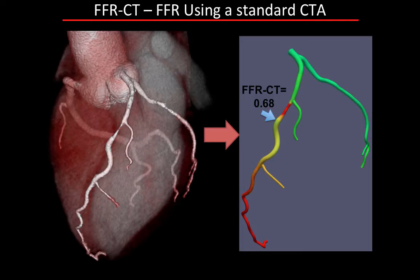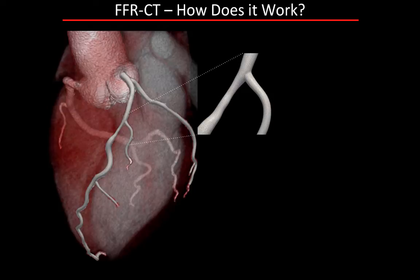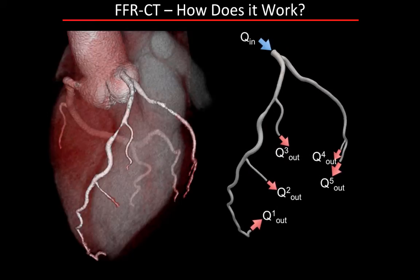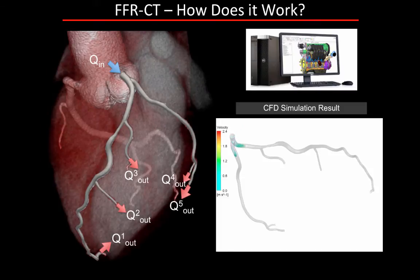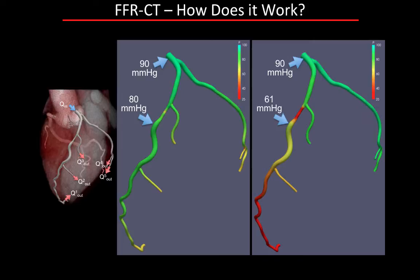FFR-CT is a new technology—the first of two solutions for using CT to get at hemodynamic significance of a lesion. It starts with your CT and gives you a simulated FFR value. You begin by segmenting the coronary lumen from the CTA; this segmentation produces a computer mesh model that a computer uses with values describing how much flow is entering and leaving each branch. Given that information, a computer solves the equations of motion for fluid flow to produce pressures, which are then translated into a simulated FFR value.